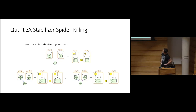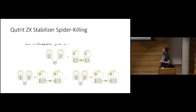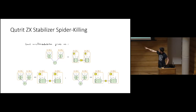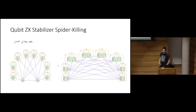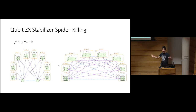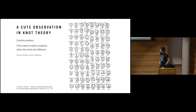Here are the spider-killing q-trit rewrites. From local complementation: one rule kills spiders where both labels are the same multiple of 2pi over 3; two other rules kill spiders with zero and some nonzero integer label. From the pivot: a rule removes pairs of spiders with labels m and minus m — the opposite in their labels — by adding complete graphs between their neighbourhoods with different Hadamard weights.